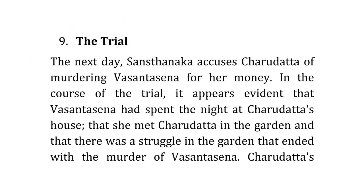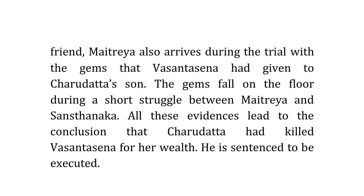Act 9: The Trial. Sansthanaka accuses Charudatta of murdering Vasantsena for her money. In the course of the trial, it appears evident that Vasantsena had spent the night at Charudatta's house, that she met Charudatta in the garden, and that there was a struggle that ended with her murder. Charudatta's friend Maitreya arrives during the trial carrying the jewels Vasantsena had given to Charudatta's son. The jewels fall to the floor during a struggle between Maitreya and Sansthanaka. All these evidences lead to the conclusion that Charudatta killed Vasantsena for her wealth, and he is sentenced to be executed.